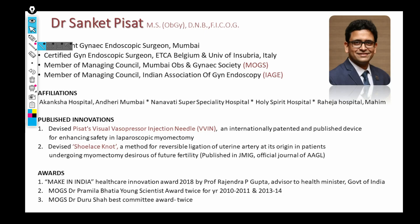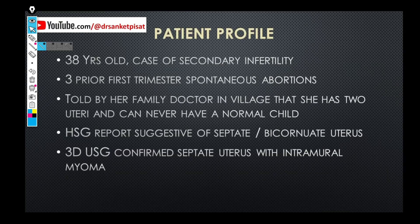First let us take a look at the patient's history. This particular patient is a 38-year-old lady. She is a case of secondary infertility and she has three prior first trimester spontaneous abortions. She was told by her family doctor that she has two uteri and can never hope to have a normal child. The HSG report was suggestive of a query septate, query bicornuate uterus. We did a three-dimensional ultrasound which confirmed that it was indeed a septate uterus with an intramural myoma.